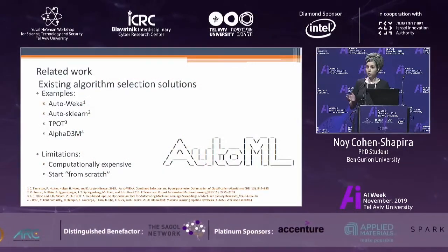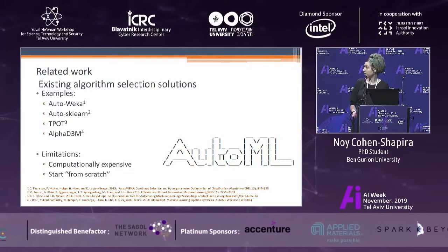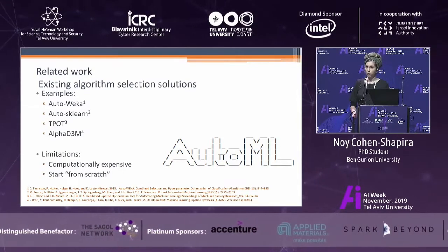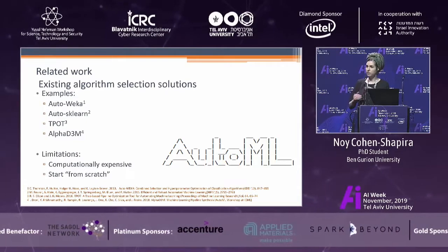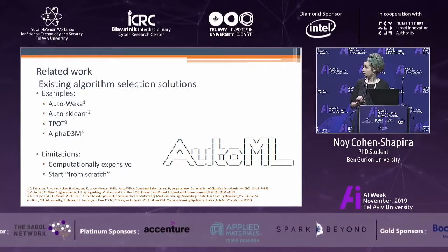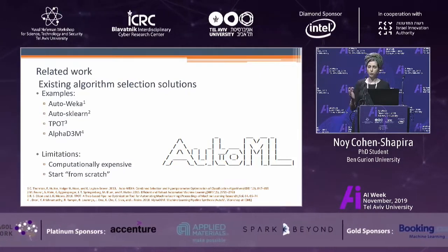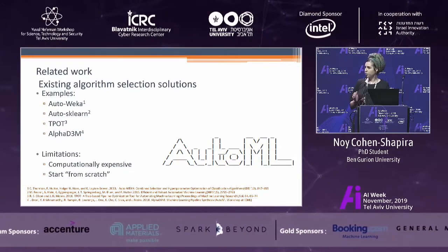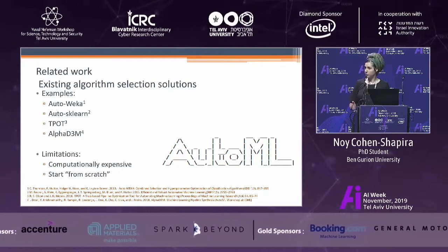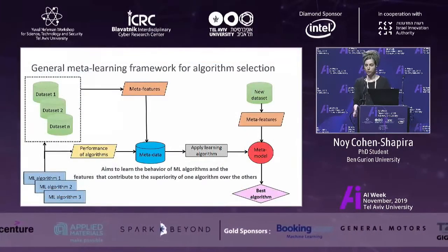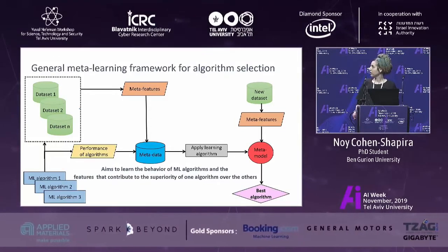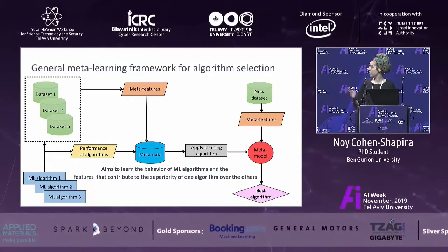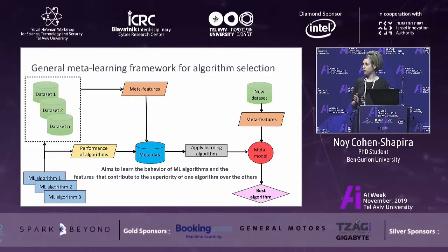There are some available solutions such as AutoWeka and AutoSKLearn, but although effective, they are computationally expensive because they require an iterative search of different configurations. In addition, most existing solutions have to start the search from scratch, and for large datasets, even a few runs may take several hours. So there is an alternative approach called meta-learning that aims to learn the behavior of machine learning algorithms and the features that contribute to the superiority of one algorithm over others.